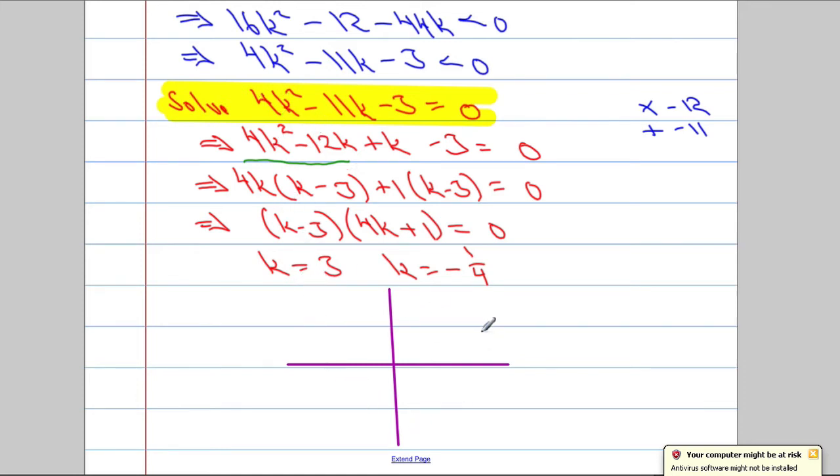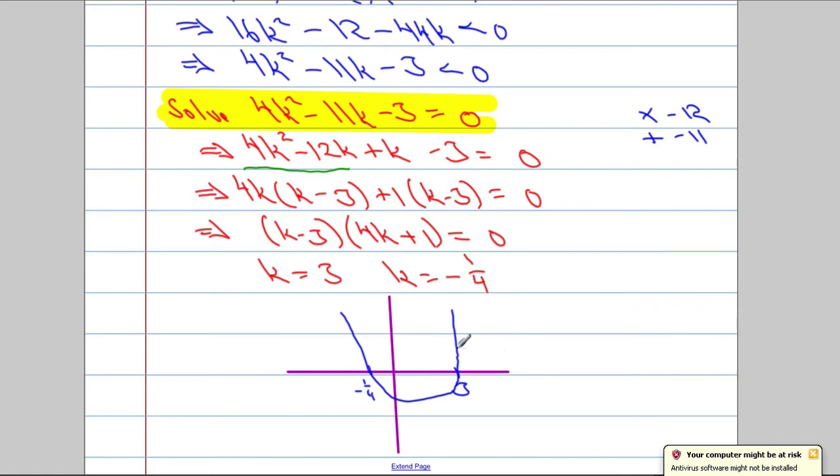We had a quadratic here, this was the function that we had. And when we solved it, we found that the critical values were the 3 and the negative 1 quarter. So if I was to sketch it, it's a positive quadratic, it's going to be a U shape, and it's going to cut the axis at 3 and negative 1 over 4. And it's going to come down like this, go through that 3.